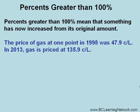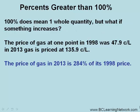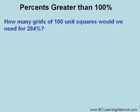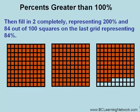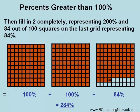The price of gas at one point in 1998 was forty-seven point nine cents per liter. In 2013, gas is priced at one hundred and thirty-five point nine cents per liter. The price of gas in 2013 is two hundred and eighty-four percent of its 1998 price. To represent 284%, we would need three 100-unit-square grids: shade in two completely and shade in 84 out of 100 squares in the last grid, giving us 100% plus 100% plus 84% equals 284%.